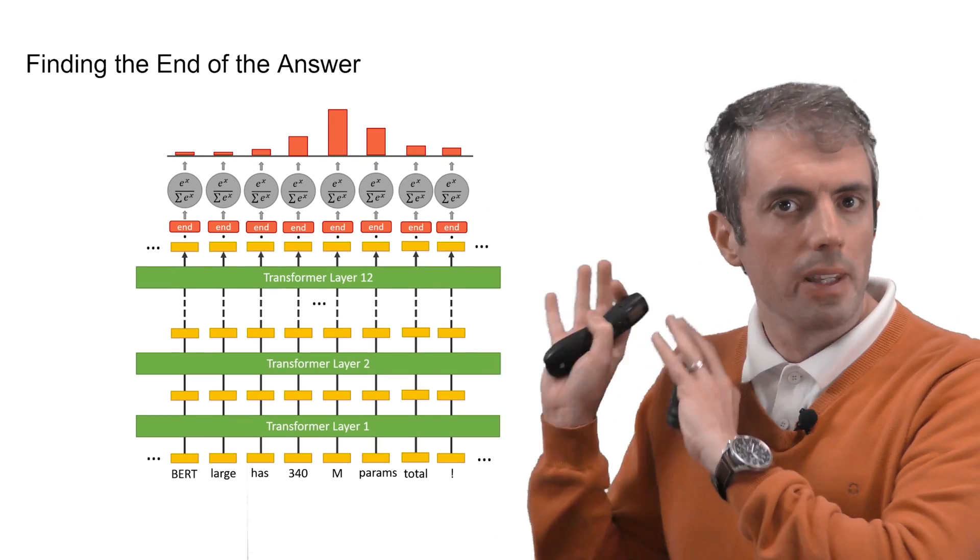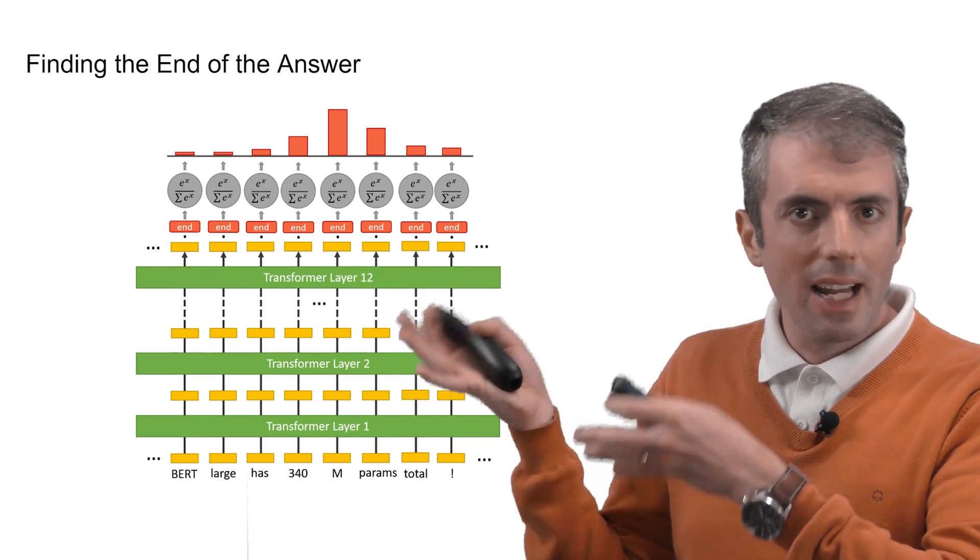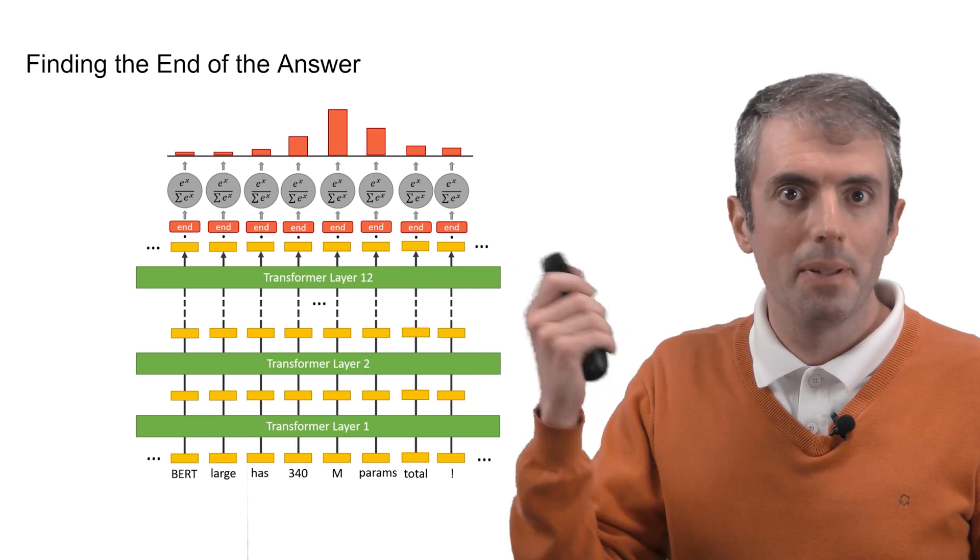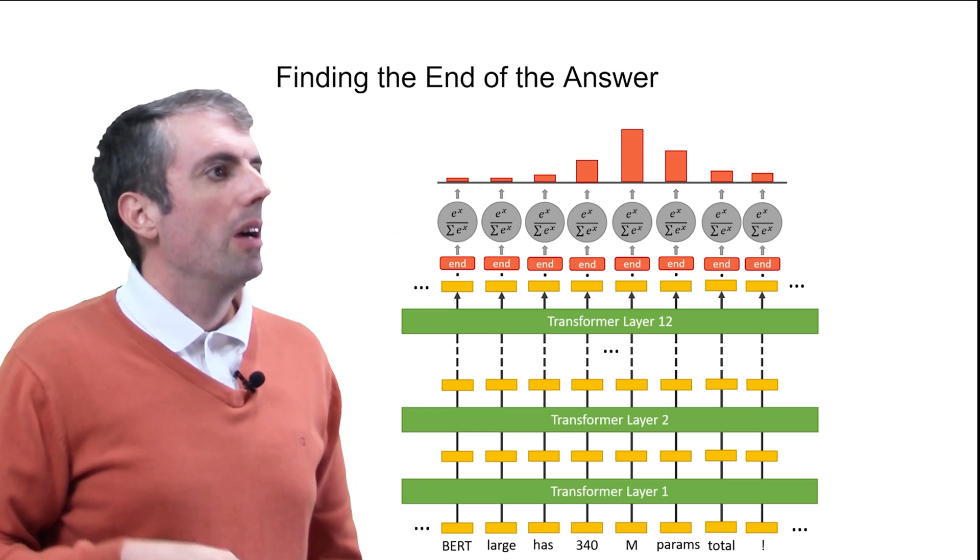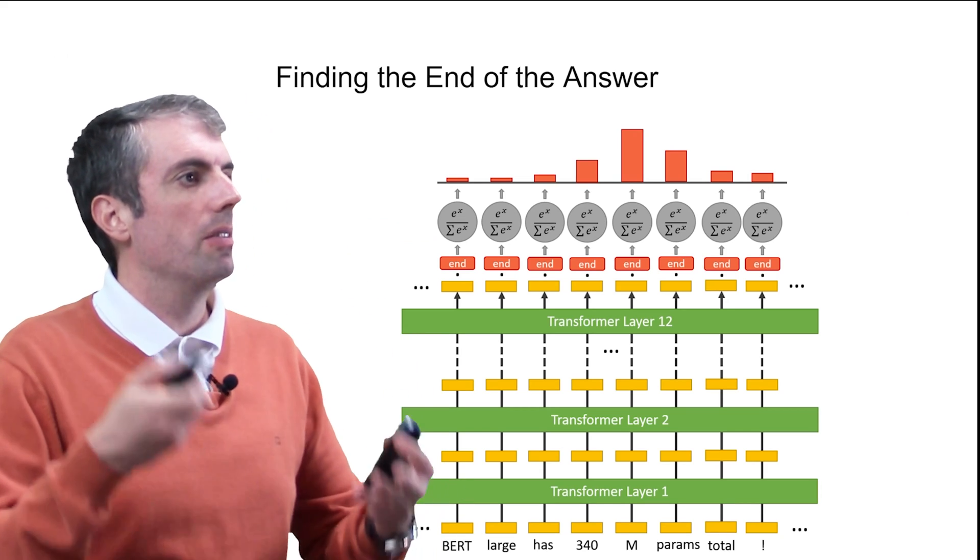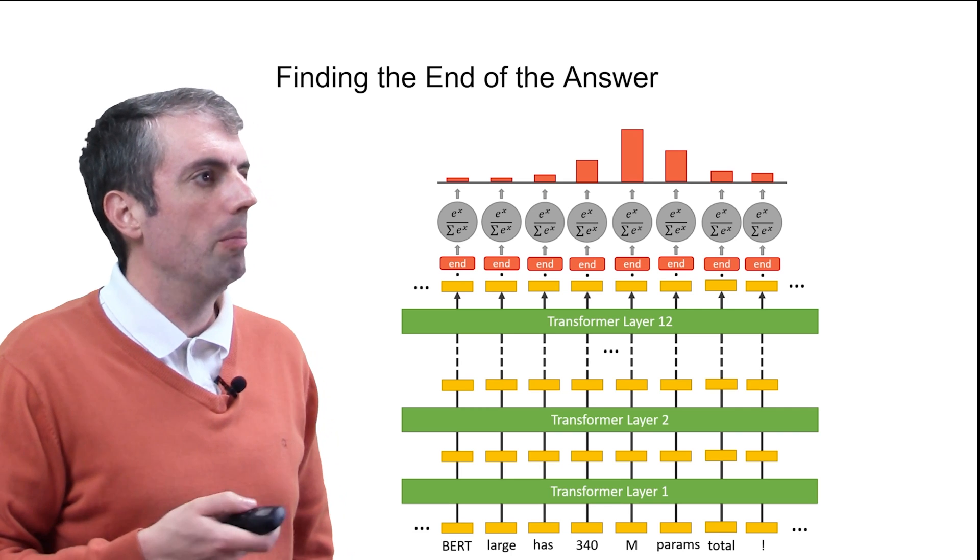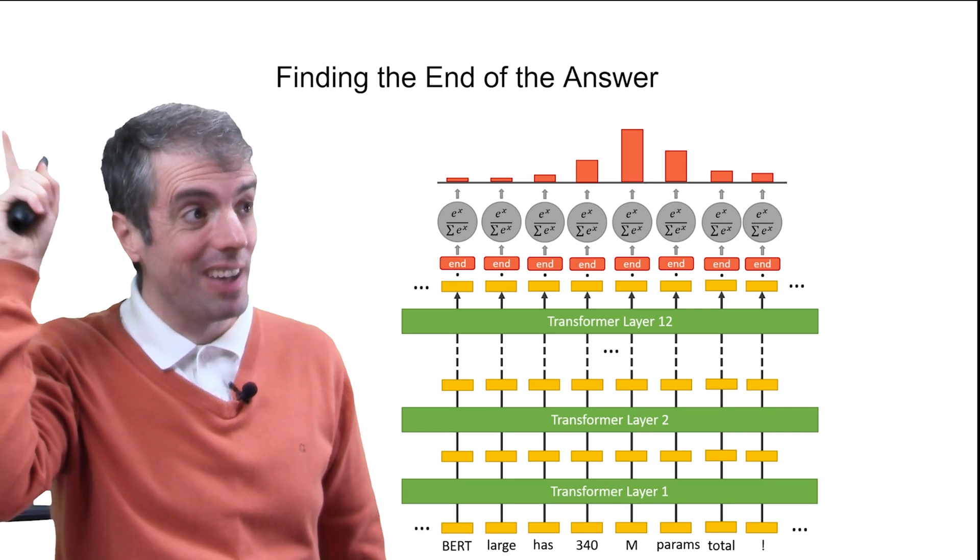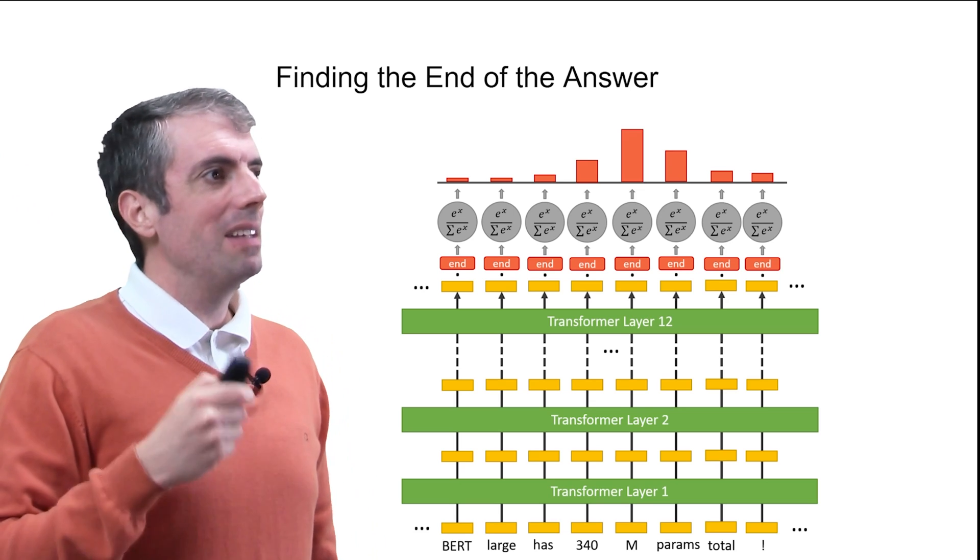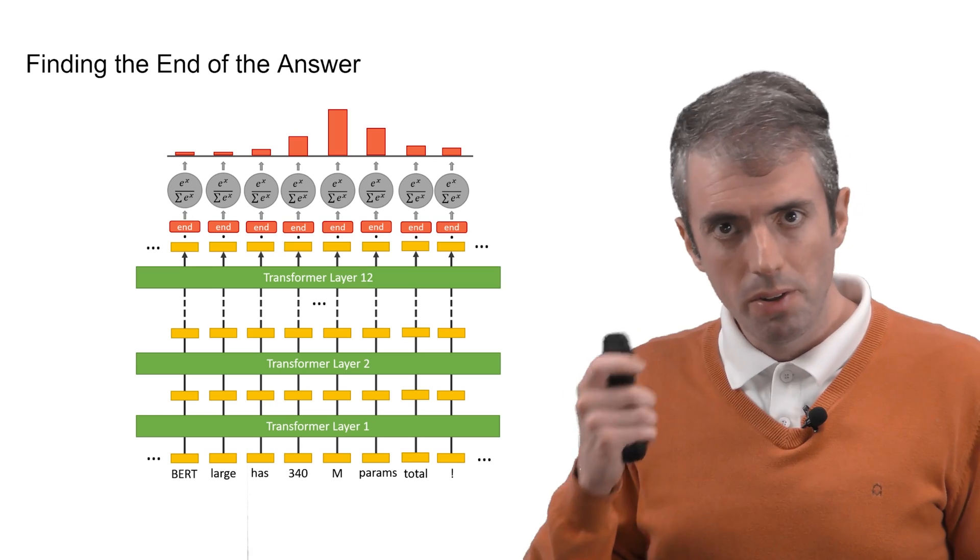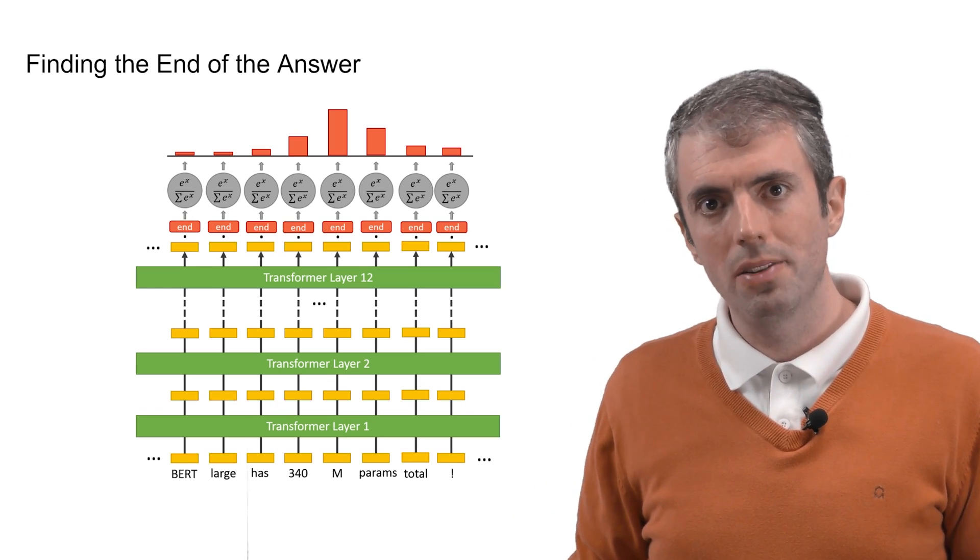And of course you do the same thing for the end position. It's exactly the same except you have a different weight vector for the end position classifier. Remember that this will all become a giant computation graph in your favorite deep learning framework. So you're not just optimizing for this final classifier, you're also fine-tuning all of the millions of parameters inside BERT to do a better job of answering the question.